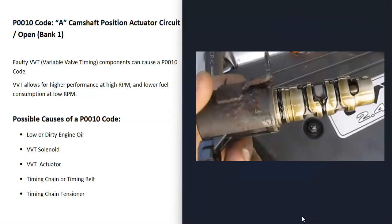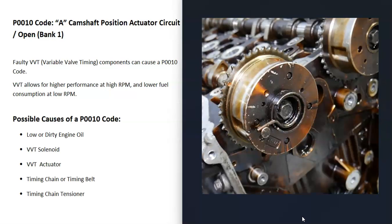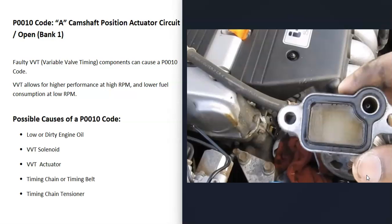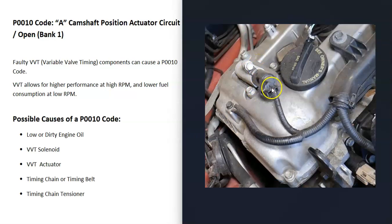Another possible cause is an issue with the variable valve timing components, which include solenoids that slide in and out, and an actuator sometimes called a phaser — this is what the timing chain rides on. The most common component to fail is the solenoid, as it gets clogged up with old dirty engine oil. There are sometimes little screens that help filter the oil, and these can also become clogged.